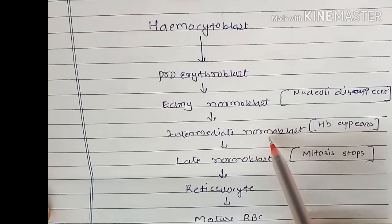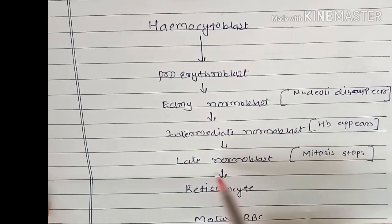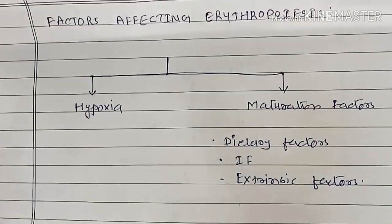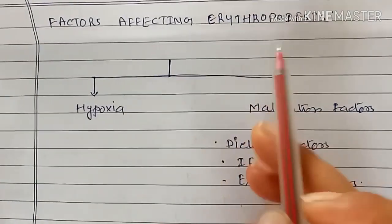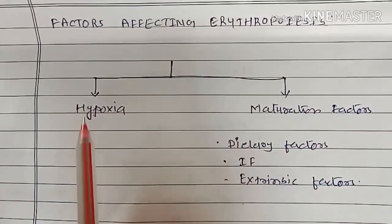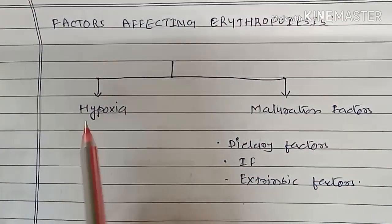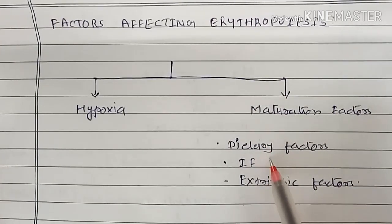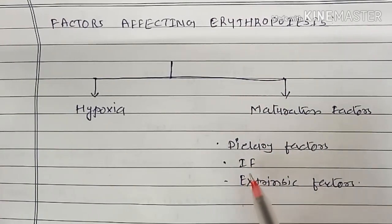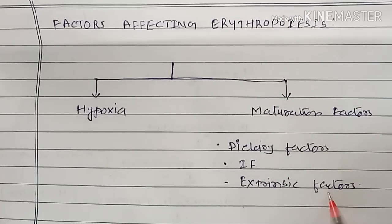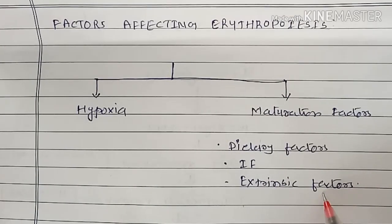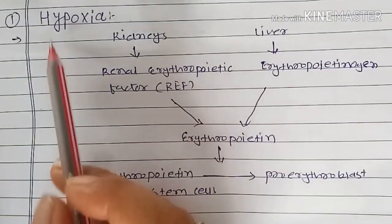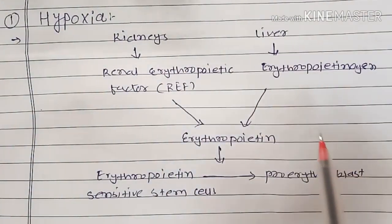Hemoglobin appears in the phase of intermediate normoblast, and mitosis stops at the late normoblast stage. Factors affecting erythropoiesis include hypoxia and specific maturation factors such as dietary factors, intrinsic factor, and extrinsic factors.